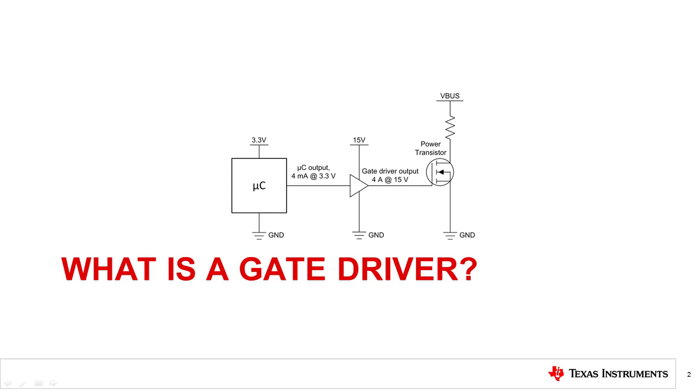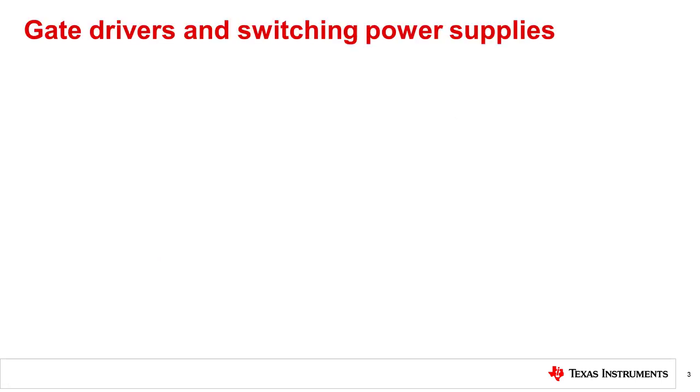In high-power applications, a microcontroller output is not usually suitable for driving larger power transistors. But why would a microcontroller be driving a power transistor? To better answer the question, let's consider the biggest application. Switching power supplies are at the heart of nearly every modern electrical system. Anything that plugs into wall outlets can take advantage of switching power supplies for power factor correction and DC rail generation.